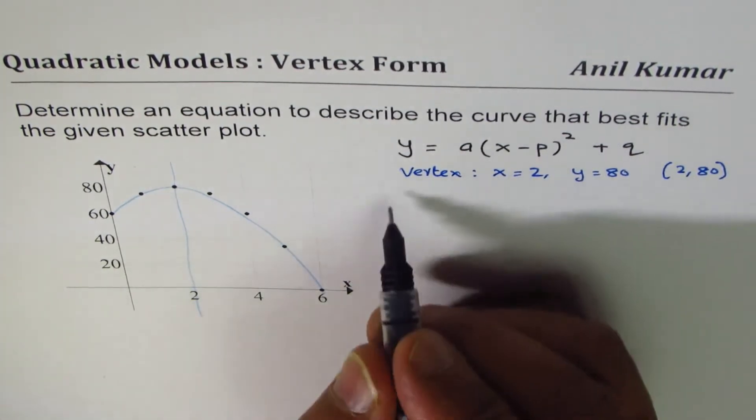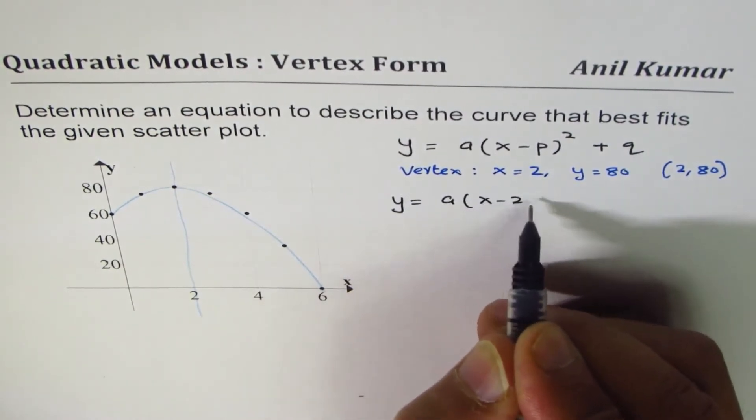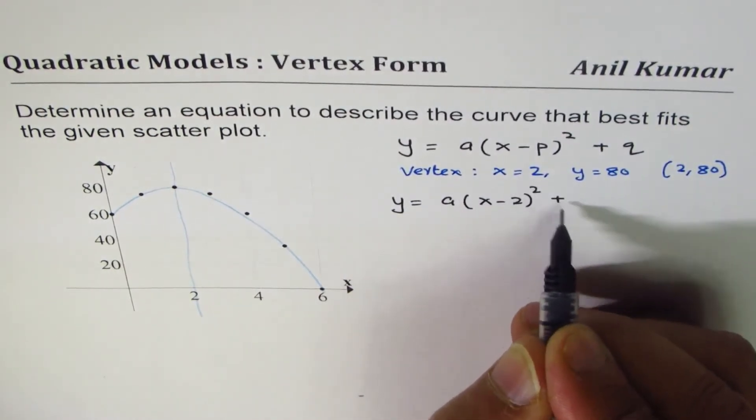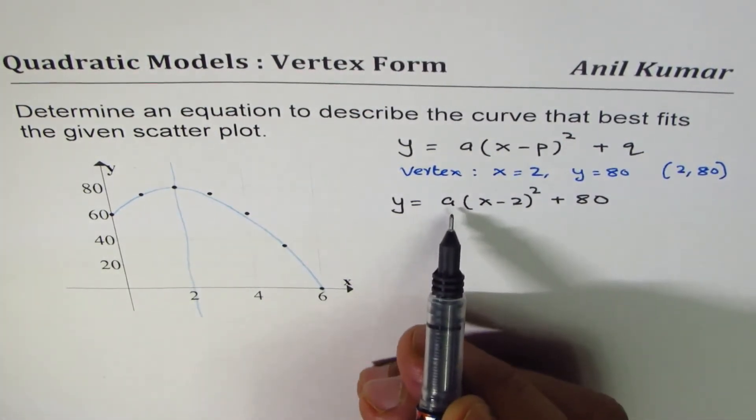Now, if we use this vertex, then we can write the general form as y equals to a times (x minus 2) whole square plus 80. Now, the question is, how to find the value of a?